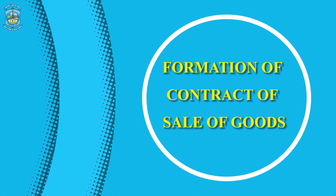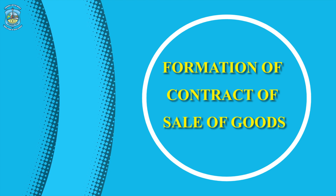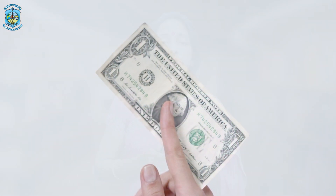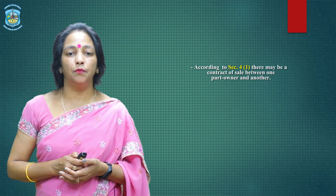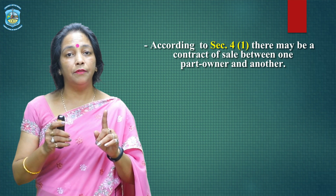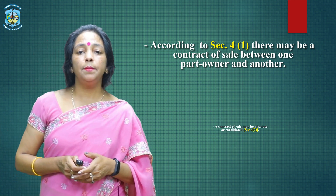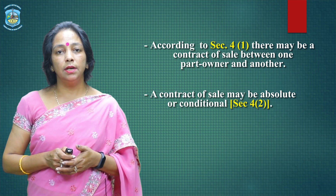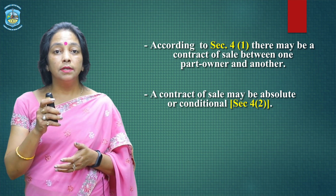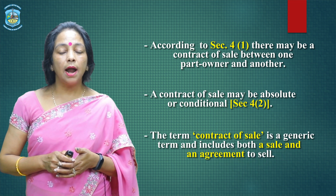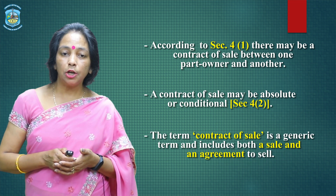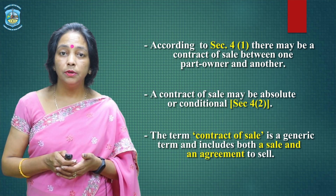Now, the formation of a contract of sale of goods. A contract of sale of goods is a contract whereby the seller transfers or agrees to transfer the property in goods to the buyer for a price. According to Section 4 subsection 1, there may be a contract of sale between one part-owner and another. A contract of sale may be absolute or conditional according to Section 4 subsection 2. The term 'contract of sale' is a generic term and includes both sale and agreement to sell.